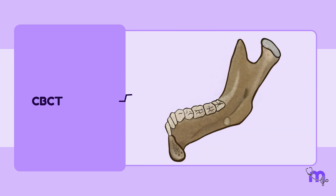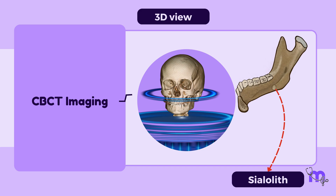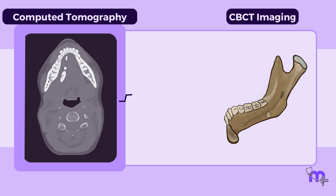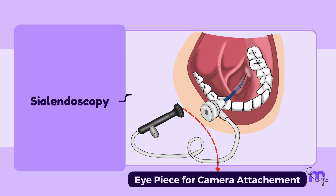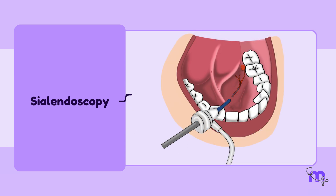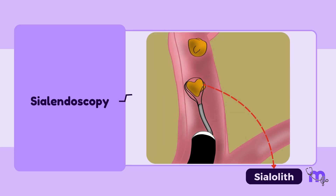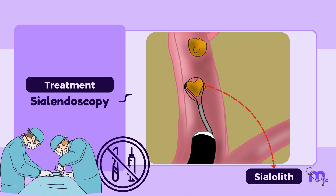CBCT imaging with sialography offers a 3D view, reducing the overlapping of structures and providing a more accurate image than traditional two-dimensional radiographs. Compared to CT scans, CBCT uses significantly less radiation exposure. Finally, sialendoscopy uses a tiny camera to provide a direct, magnified view of the salivary ducts and any sialoliths present, allowing for highly accurate diagnosis. Sialendoscopy is increasingly being used for treatment as well, and compared to traditional open surgery, it is a safe and minimally invasive procedure.